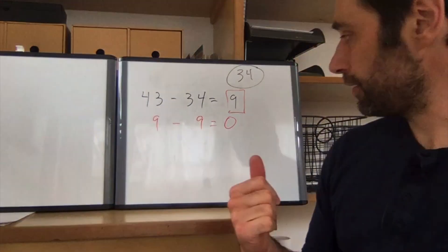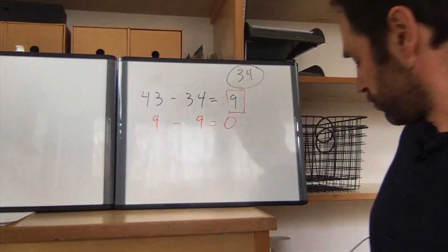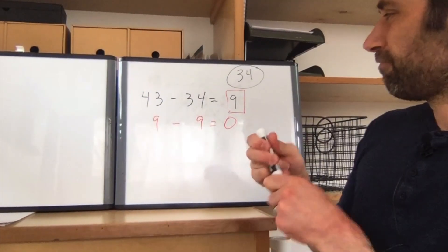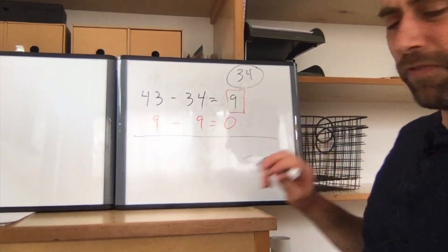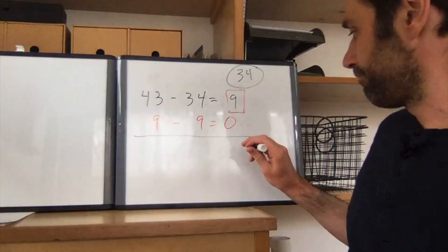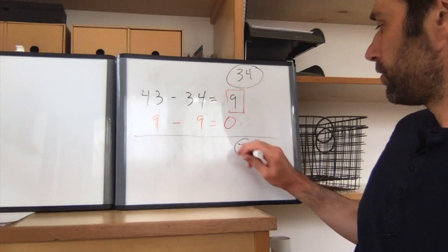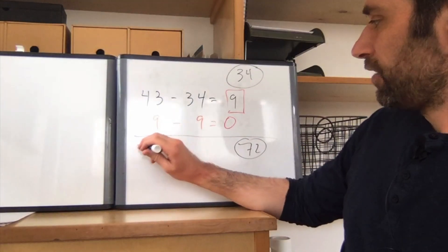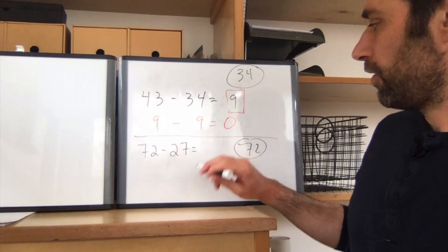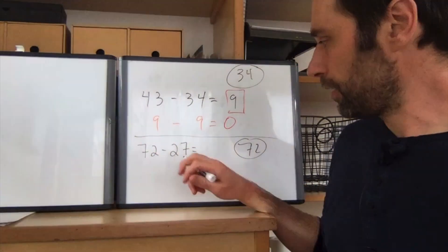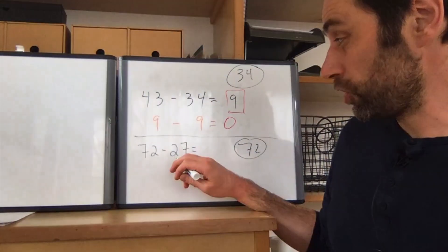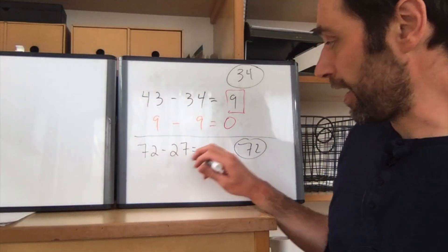So let's see what else could happen. Let's try a different number. Maybe I'll try 72. So 72 minus its reverse is 27. That'll be, I have to do a little work here. Looks like it's 45. You can double check me on that.